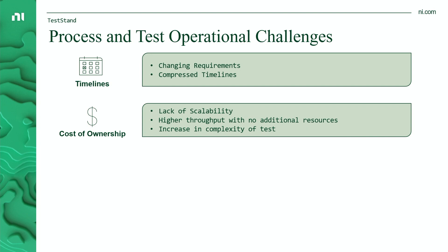The second is cost of ownership. As we just mentioned, as we continuously need to add features to our test executive, we're adding to the overall cost of ownership with time spent developing these new features in a bit-by-bit fashion. TestStand can mitigate some of this by making sure we have all the foundational features of a test executive from the start — you don't need to add to it each time to develop new features.